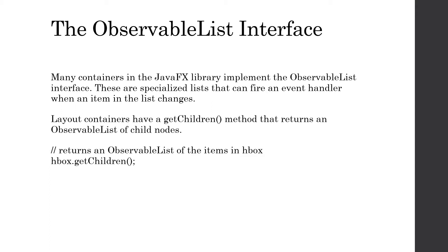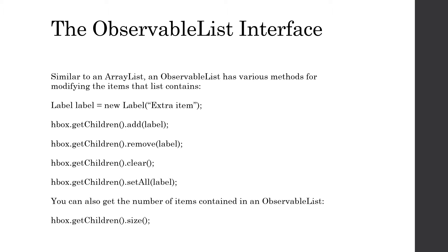We're going to do some examples with the HBox container. Layout containers have a getChildren method that returns an ObservableList of the child nodes — that means all items, whether controls or other containers, inside of it. Once you've gotten that ObservableList, you can start applying methods to it, like adding or removing a control or container.